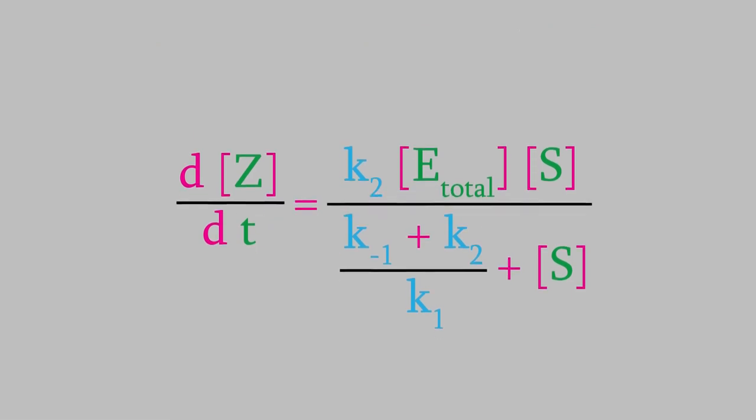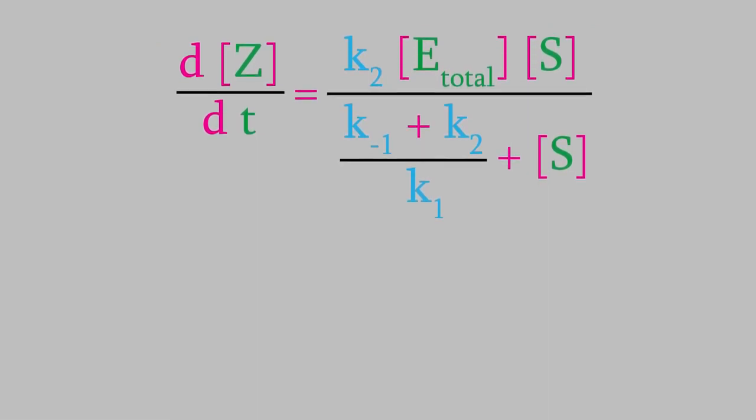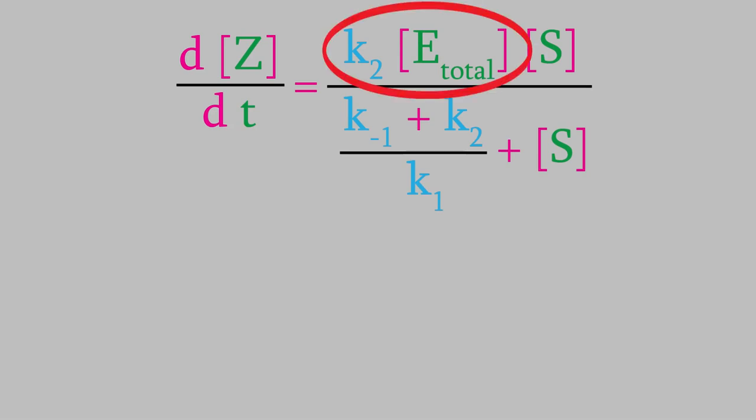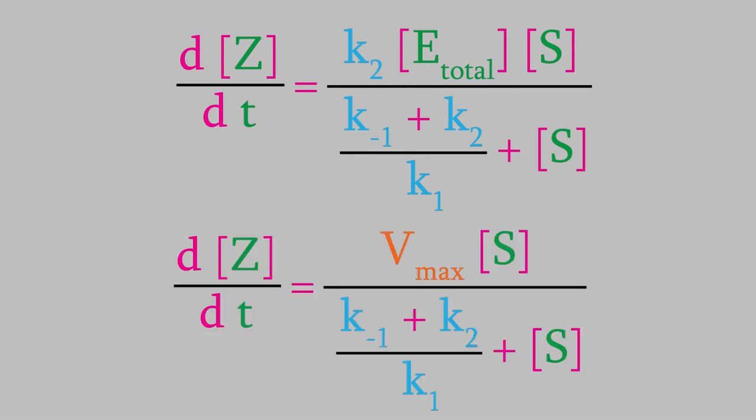Now here's why that was a helpful thing to do. In the numerator, K2 and E total are both constants for a reaction. That combination of constants is usually given the symbol Vmax. We'll see why that symbol makes sense in just a few minutes. Meanwhile, all the rate constants in this fraction are also constants for a given reaction. So we can give that its own symbol too, which is Km.